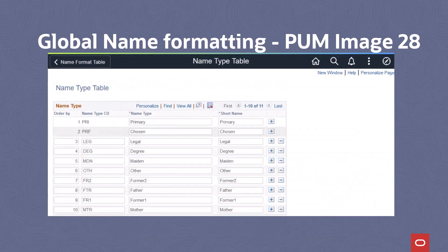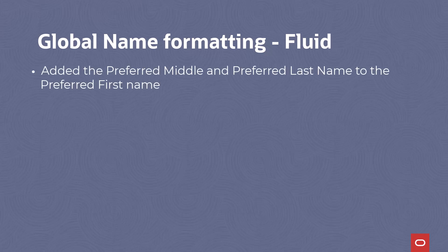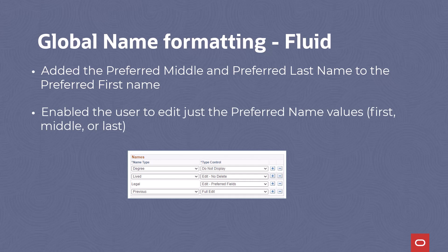For example, you can now update the label for all three preferred name values to a label appropriate for your audience — such as live name or chosen name. The PUM 29 update contains those same configuration options now applied to existing fluid pages where you can manage names. Some of the changes you'll want to evaluate include: we've added preferred middle and preferred last name to accompany the preferred first name and the associated configurability options. You can have a single row for the primary name type with preferred fields enabled. You can now enable the user to edit just the preferred name values — first, middle, or last. You'll see a new translate value called edit preferred fields on the type control page to enable this control.